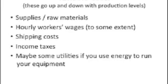Utilities are also listed here as a variable cost, with the caveat that some utility costs are probably fixed — to light the whole warehouse manufacturing facility, for example. But if you have equipment that uses a lot of energy, like electric stamping machines, and you're doing lots of production, then some of those utility costs will actually go up and down depending on your production level.